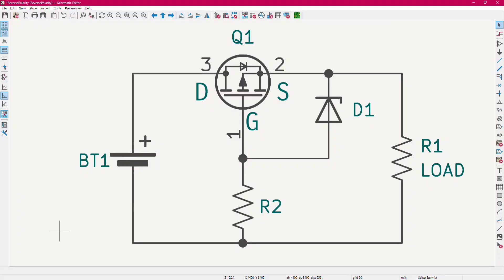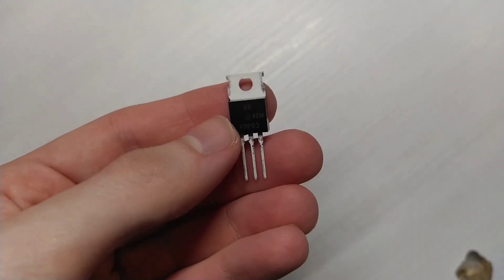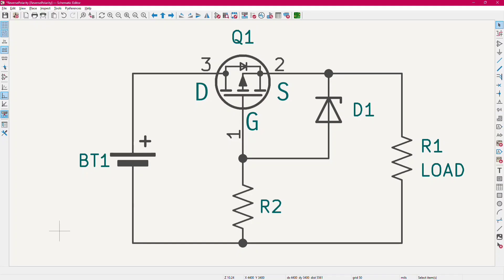Another reverse polarity protection circuit is this one. We use a p-channel MOSFET with the drain connected to the positive of the battery and the source to the load side. For the moment, let's forget about the zener and the resistor. Our p-channel MOSFET has an intrinsic body diode, and this will conduct until the PMOS is fully turned on. To turn on our PMOS, the gate voltage has to be more negative than the source voltage by at least the gate threshold voltage.